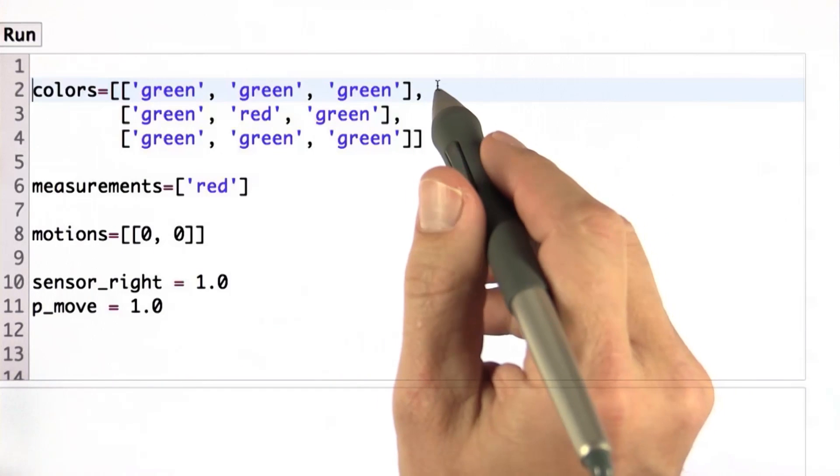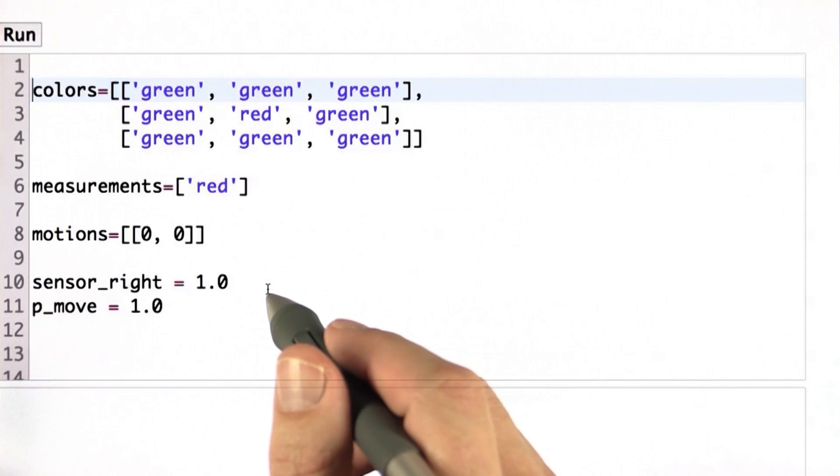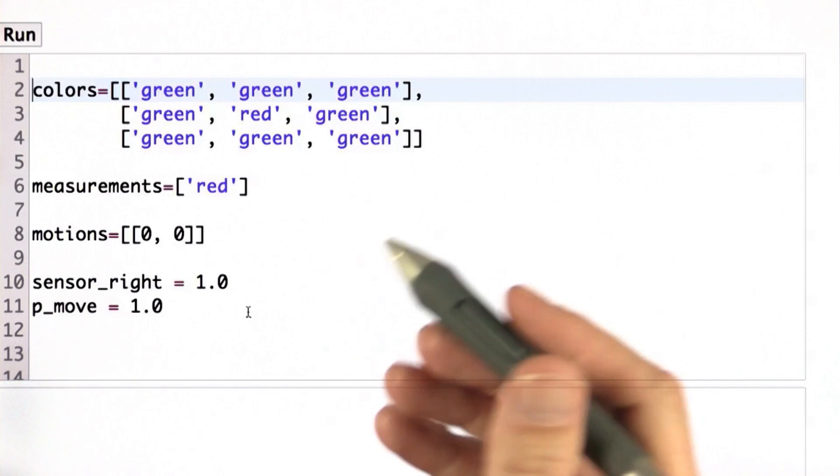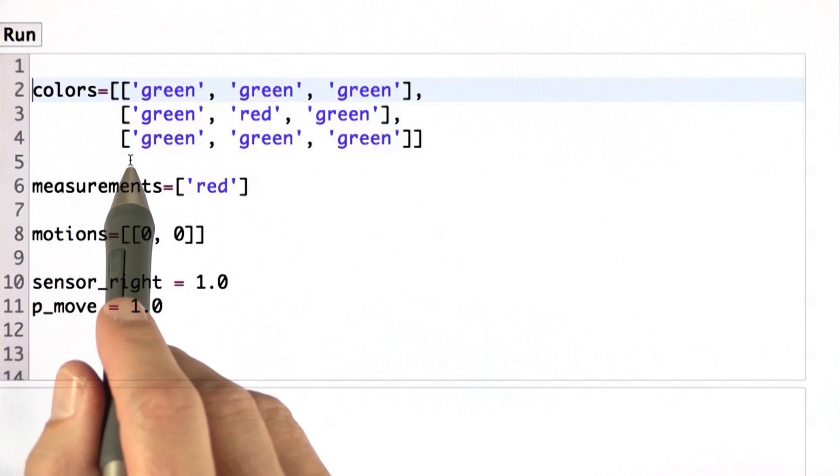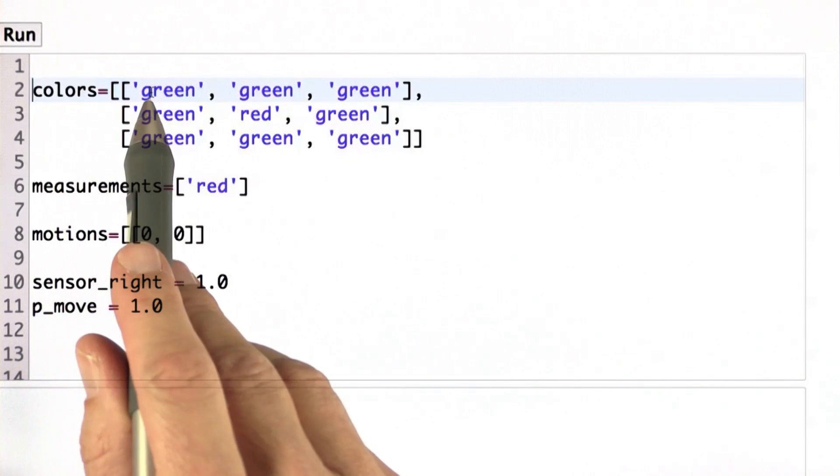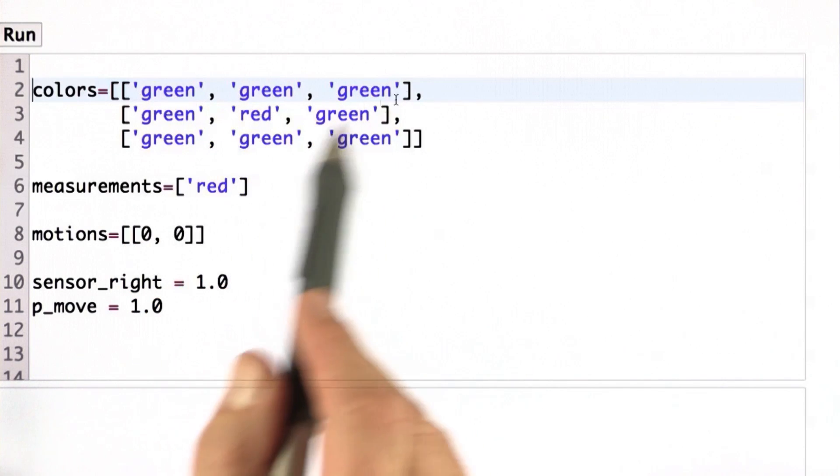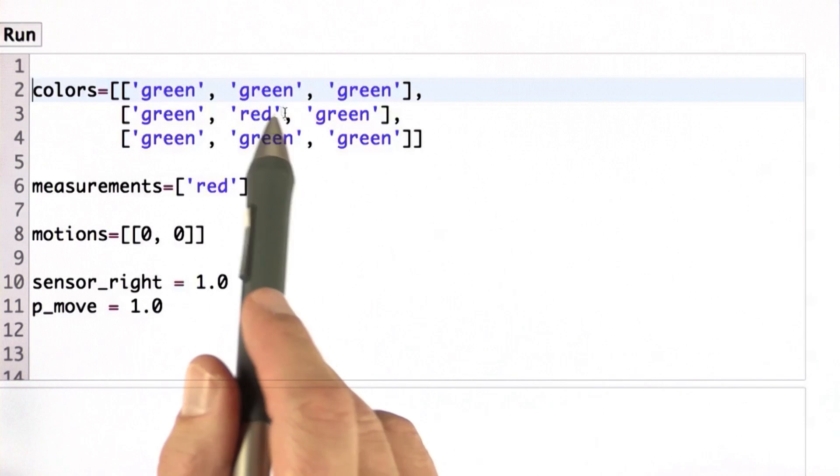Here's a simple example of the type code I'll give to you as a specification of the problem, and then you have to compute what my code computes but that you can't see right now. The world in this specific instance is a 3x3 matrix, three rows, three columns. It has only two possible colors, green or red. And this specific world has only a single red at the center location over here.